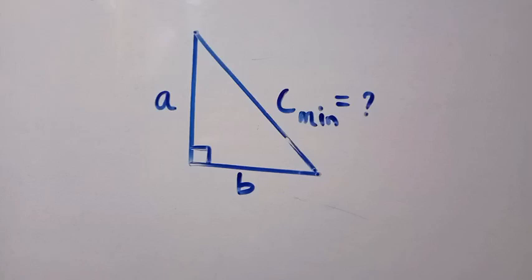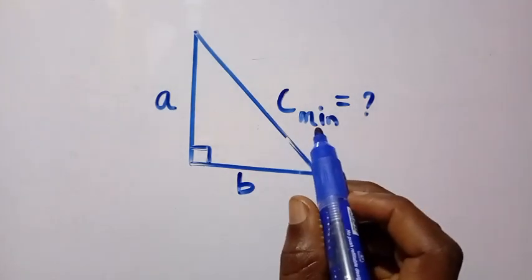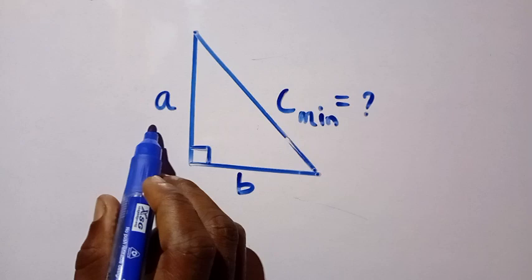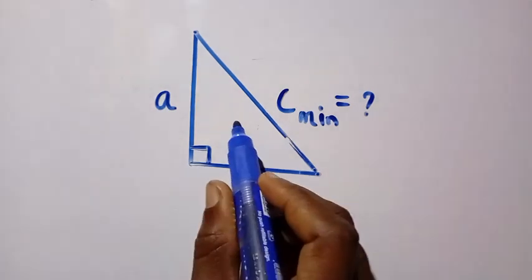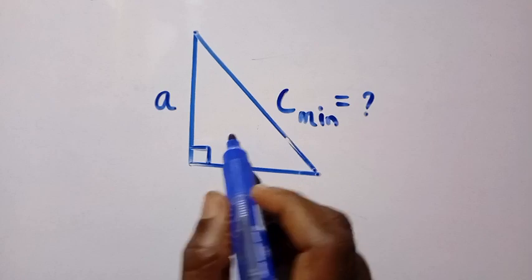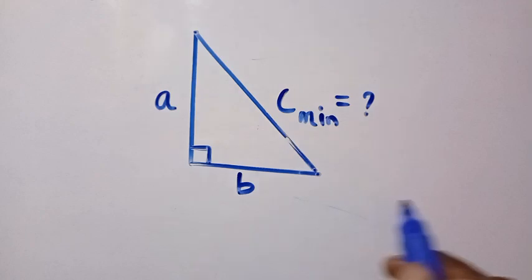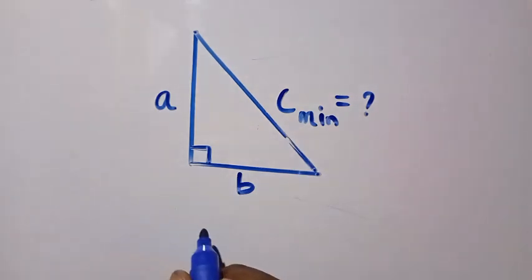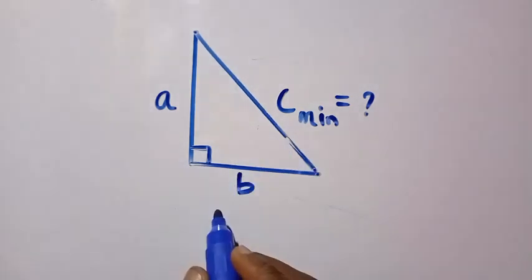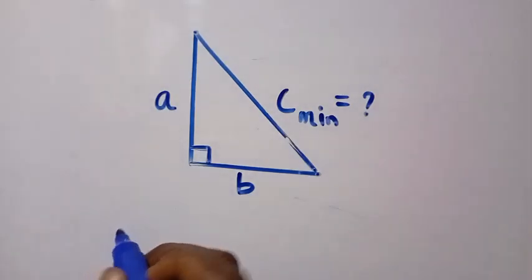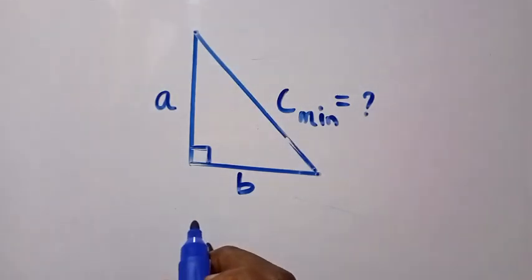Good day viewers, welcome. We want to solve this triangle question — a nice geometry problem where we need to find the minimum value of c, given that we have sides a and b, the area is 7, and the sum of a and b equals 7. I'm going to present two methods to solve this.